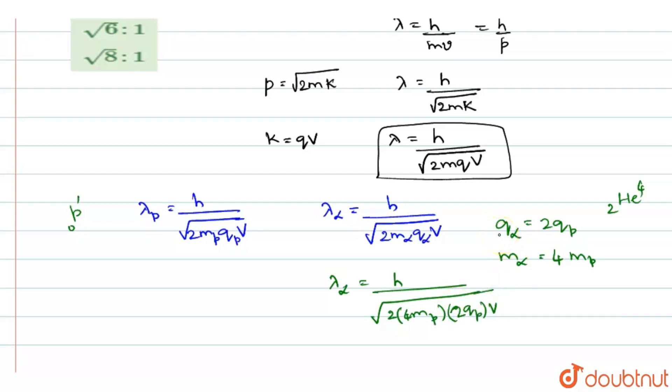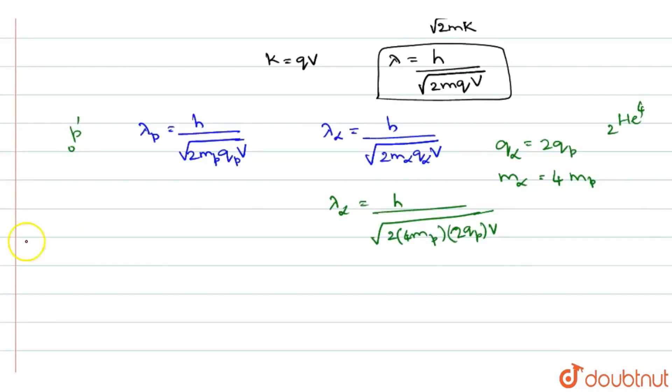Now these two we will divide one by the other so that you will get the ratio of the corresponding wavelengths. When you divide one by the other, we will write this as lambda p by lambda alpha.